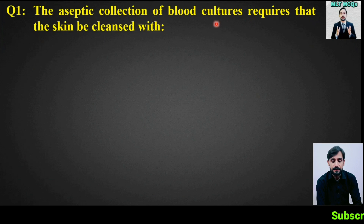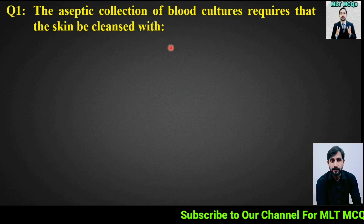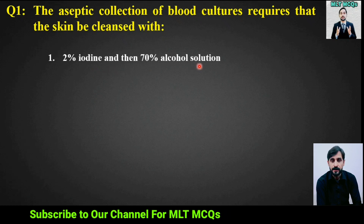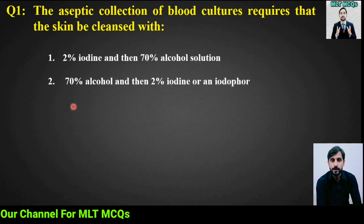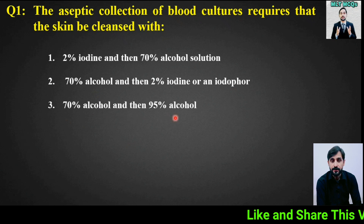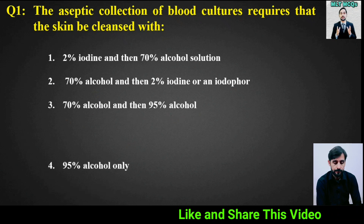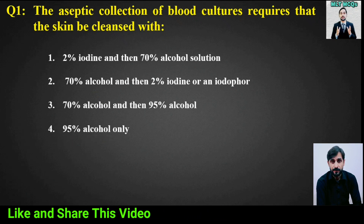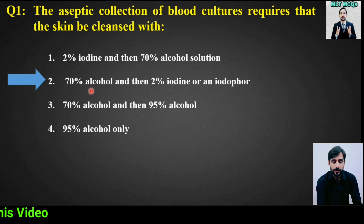MCQ number 1: The aseptic collection of blood cultures requires that the skin be cleansed with — options are: (1) 2% iodine and then 70% alcohol, (2) 70% alcohol and then 2% iodine or an iodophore, (3) 70% alcohol and then 95% alcohol, (4) 95% alcohol only. The right answer is option 2: 70% alcohol and then 2% iodine or an iodophore.